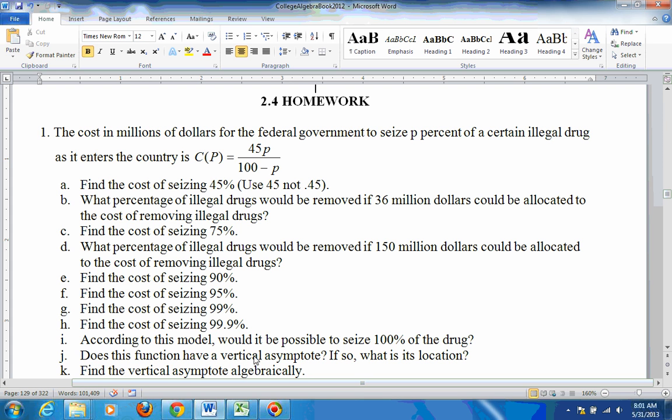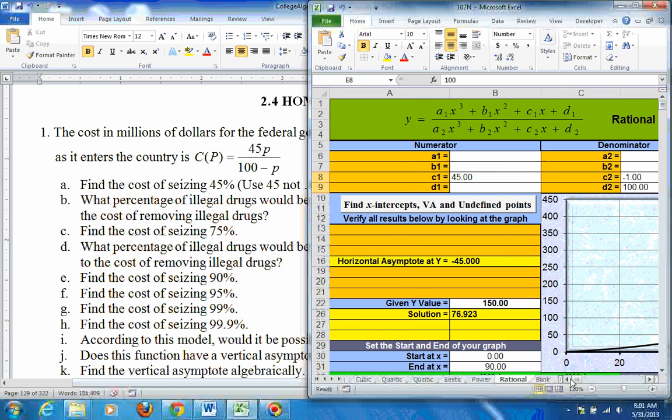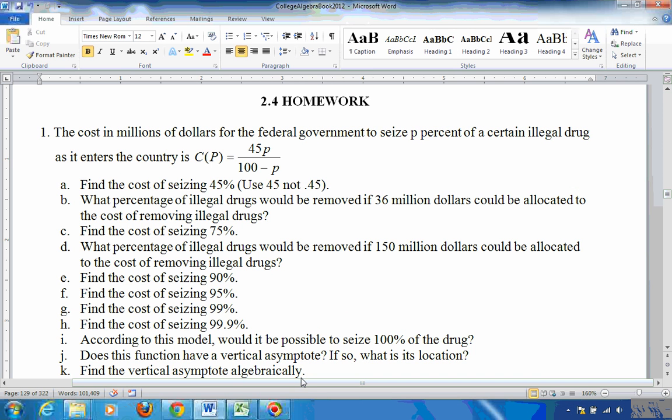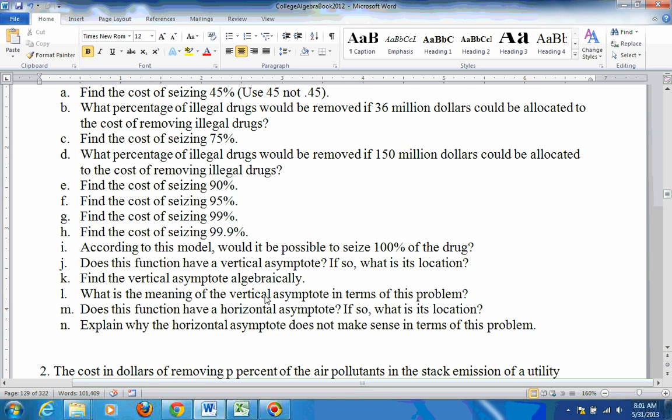And then it says, does the function have a vertical asymptote? If so, what is its location? Well, you can find the vertical asymptote by setting the denominator equal to 0. If you set 100 minus P equal to 0, you would add P to both sides, and you get 100 equals P. So there's a vertical asymptote at 100. And we would get that also on the Excel sheet by just clicking right here to find the vertical asymptotes and all that sort of stuff right here. And finding your vertical asymptote algebraically, that's where you do the 100 minus P and set it equal to 0, set your denominator equal to 0.